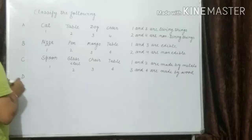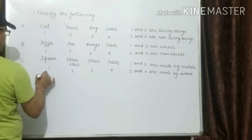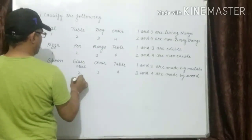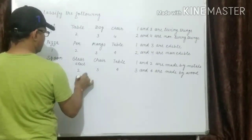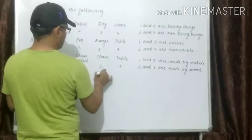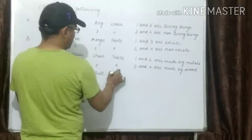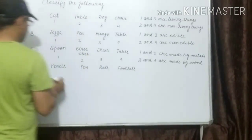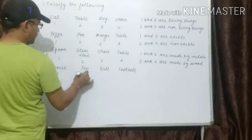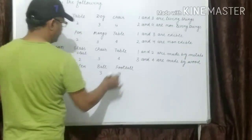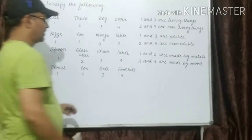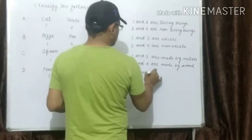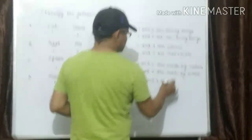Next: number one is pencil, number two is pen, number three is ball, and number four is football. Three and four are spherical in shape.